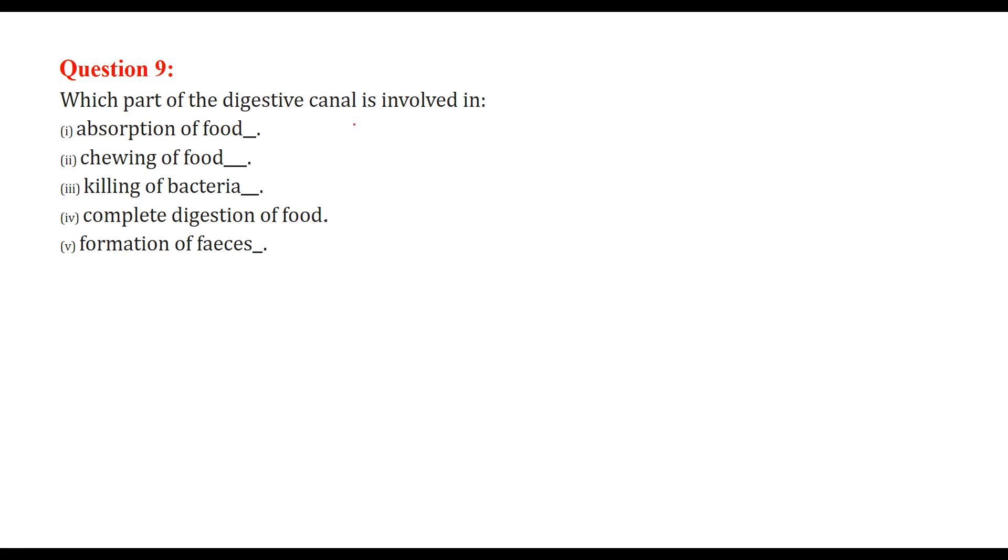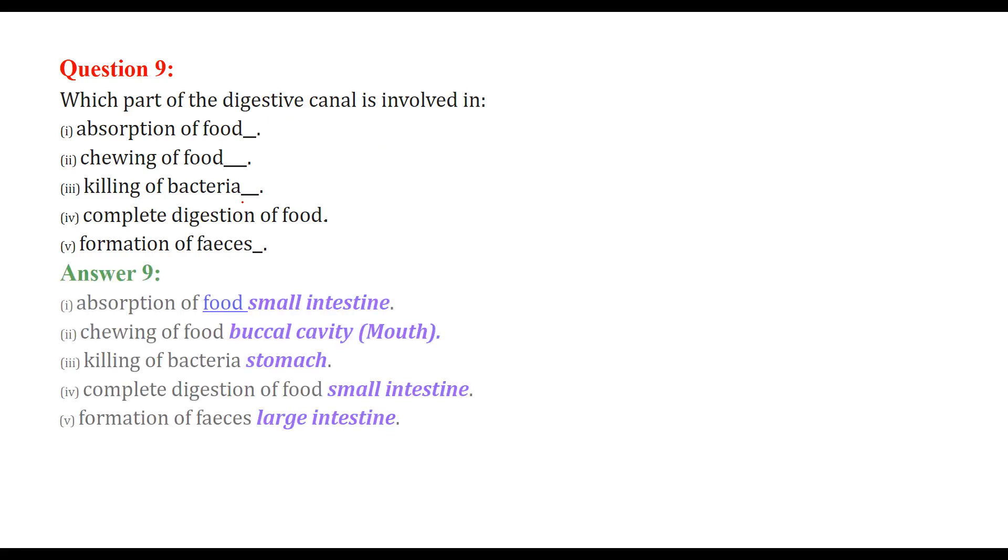Which part of the digestive canal is involved in absorption of food? This is small intestine. Chewing of food? You can say mouth, you can also say buccal cavity. Killing of bacteria? Stomach. Complete digestion of food? Small intestine. And formation of feces, that is the excreta, is large intestine.